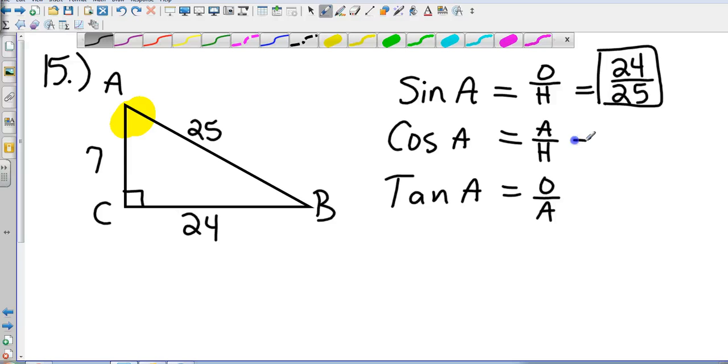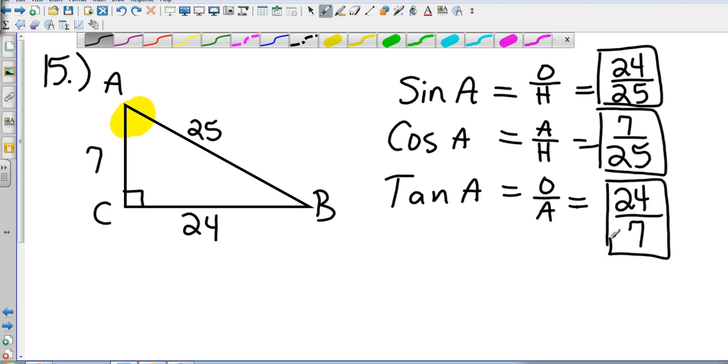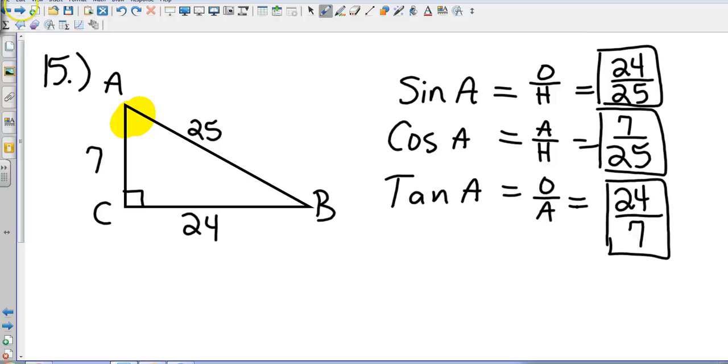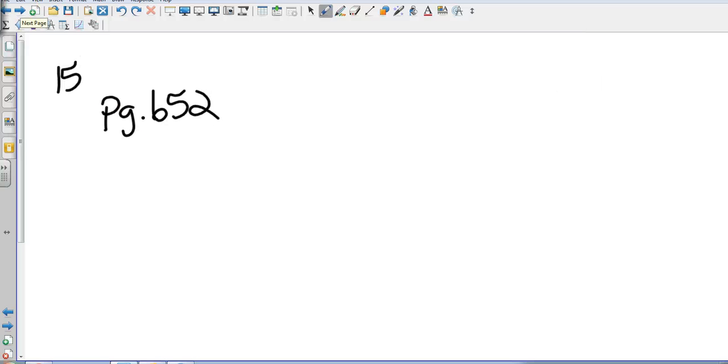Cosine adjacent is going to be 7. Hypotenuse is still 25. And then finally on tangent, opposite is 24 and adjacent is 7. So, those are the basic trig functions. Sine of A, cosine of A, tangent of A. That's going to be a three-part question. And so, it will have three checks. If you would like to find some examples of number 15, you can find those on page 652.